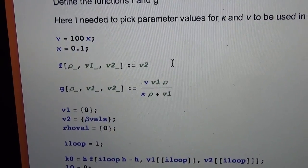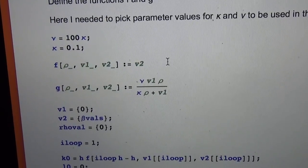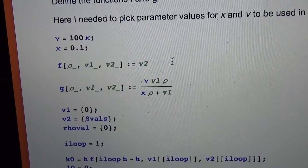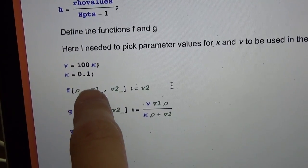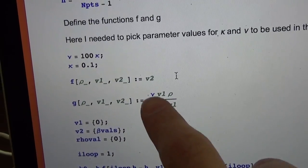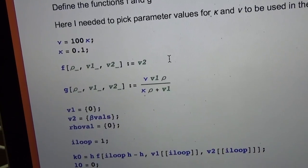So I defined kappa to be 0.1 and then nu is 100 times that. Here is our function F and our function G which are functions of rho, V1, and V2, and then I've got kappa and nu there.